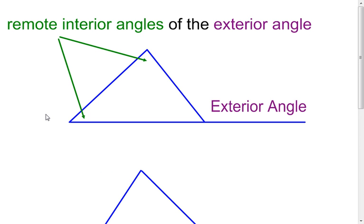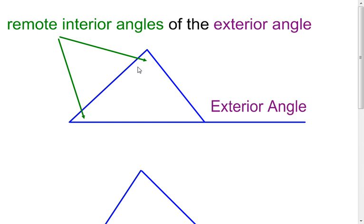Now we're going to look at a little vocab. These two angles are called remote interior angles of the exterior angle. An exterior angle is created by extending one of the sides of the triangle. I've extended the bottom side of the triangle, and this angle that's on the outside of the triangle is referred to as the exterior angle. To find your remote interior angles, go to the other side of the triangle — the two angles that are on the other side. Another way to think of it: find the adjacent angle to the exterior angle; that one is not a remote interior angle. It's the other two angles in the triangle that make the remote interior angles.